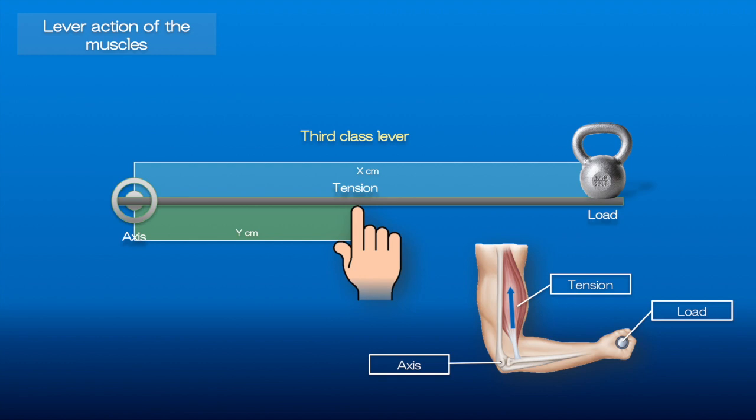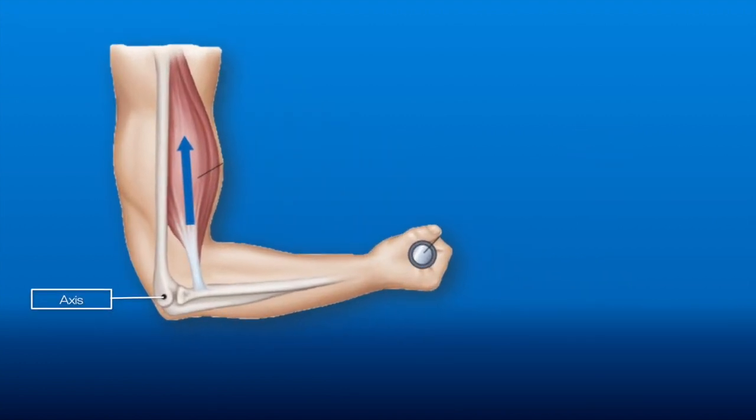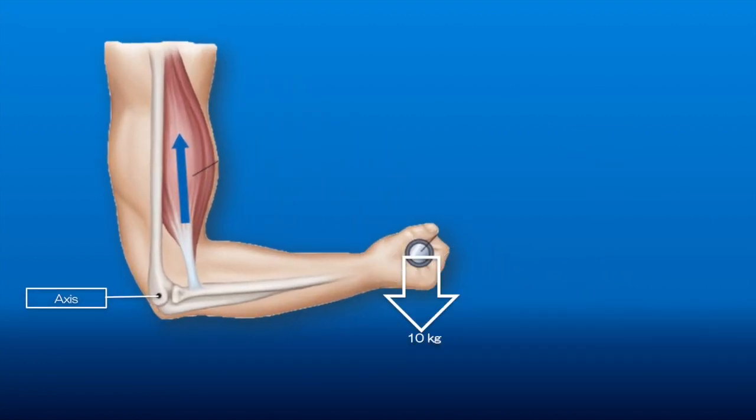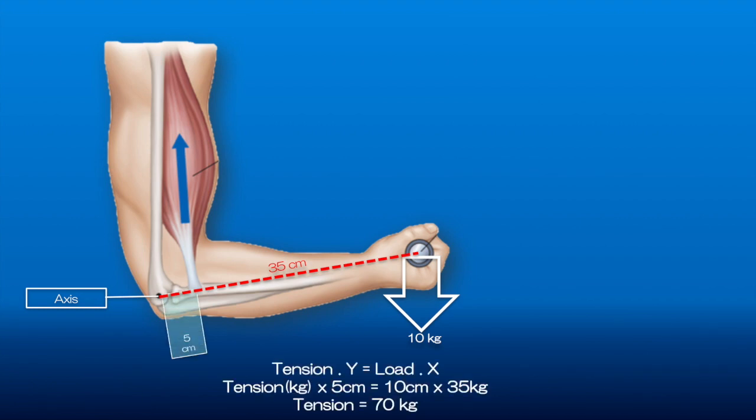As you see, this can cause a mechanical disadvantage for the energy. By calculating the tension we need to move a 10 kilogram load, you see that by calculation we need around 70 kilogram tension. But what is the advantage of having the third class lever? It produces a faster movement of the object.